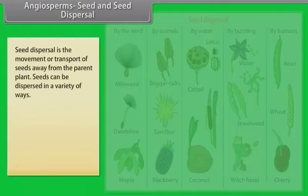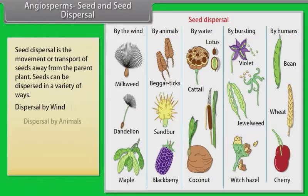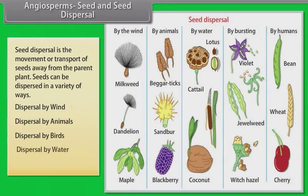Seed dispersal is the movement or transport of seeds away from the parent plant. Seeds can be dispersed in a variety of ways: dispersal by wind, dispersal by animals, dispersal by birds, dispersal by water, and dispersal by man.